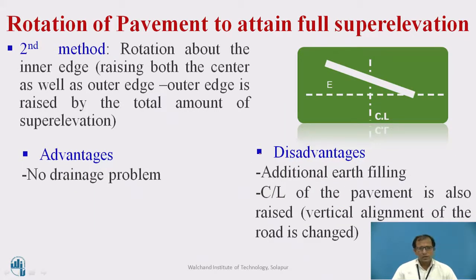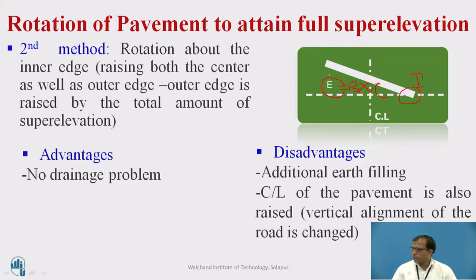The second method is rotation with respect to the inner edge of the pavement. We hold the inner edge level without altering its elevation and raise the outer edge of the pavement. The outer raising, capital E, equals the width of the pavement B multiplied by the rate of super elevation, small e — so E = B × e gives the total raising of the pavement with respect to the inner edge. After elimination of the crown, hold the inner edge level and gradually increase the outer edge throughout the transition curve. The full E continues through the circular curve, then gradually reduces back to the normal camber value.